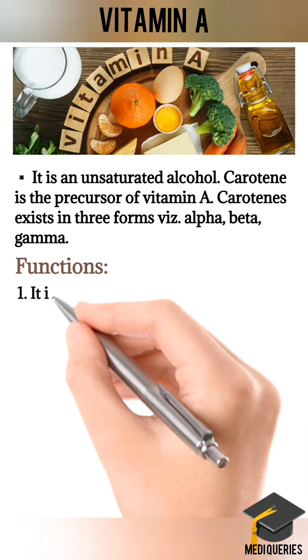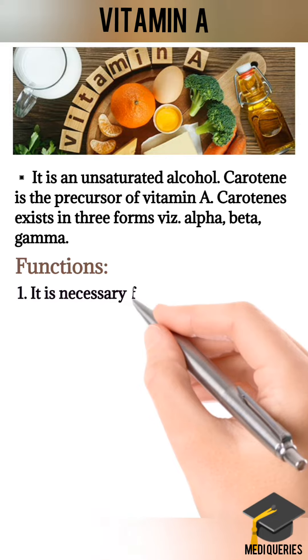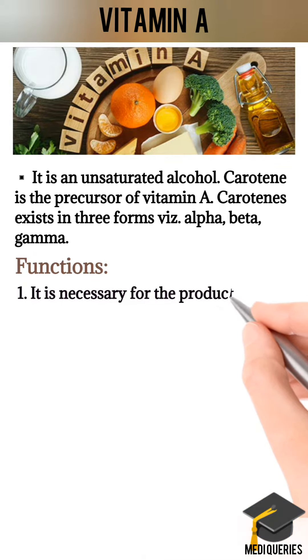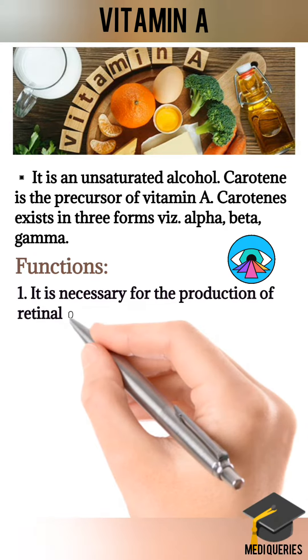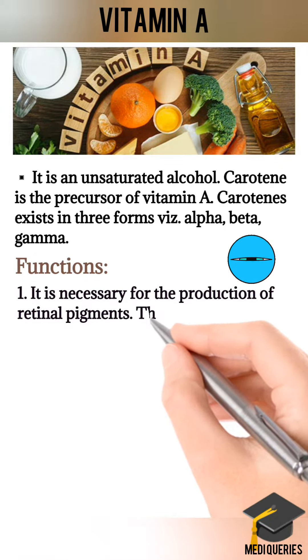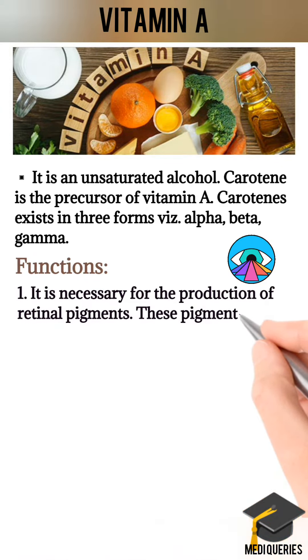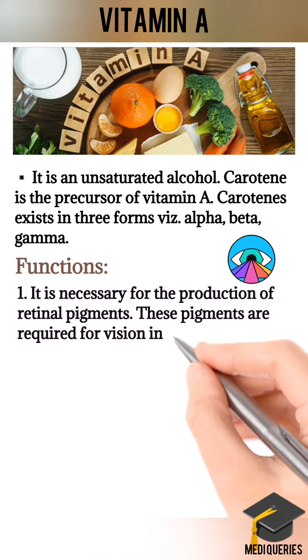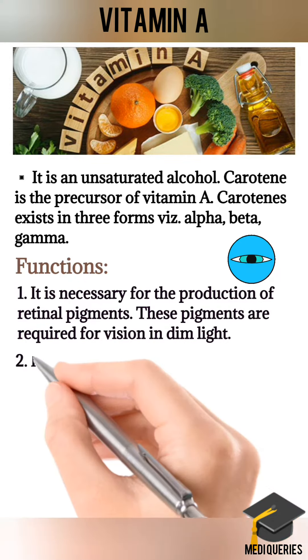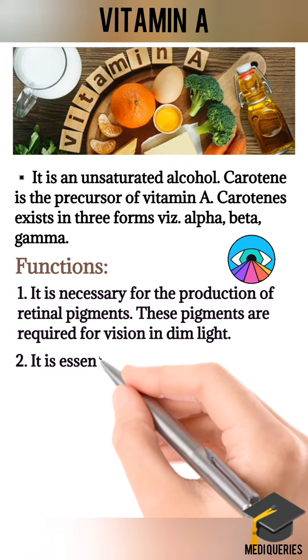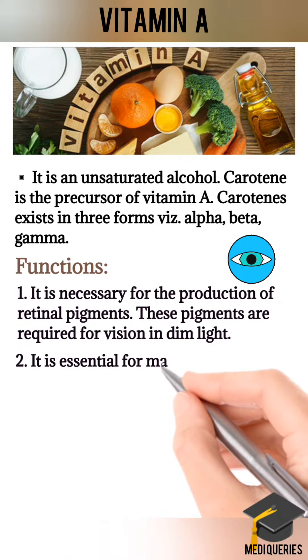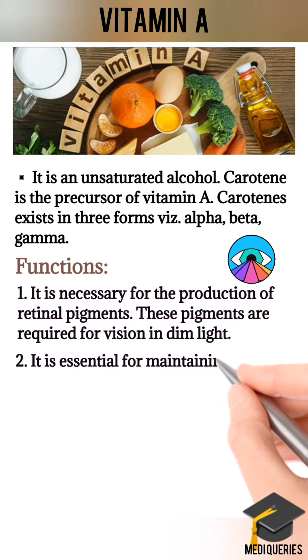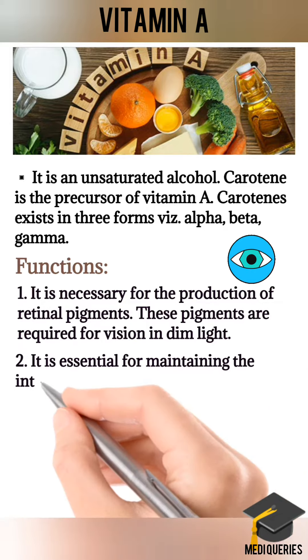Functions of Vitamin A: It is necessary for the production of retinal pigments. These pigments are required for vision in dim light. It is essential for maintaining the integrity of epithelial cells.